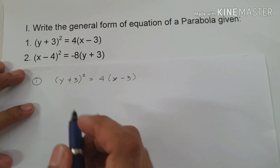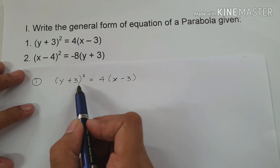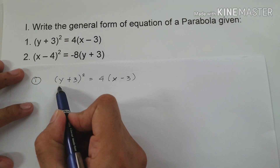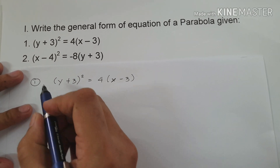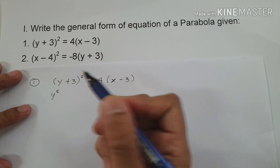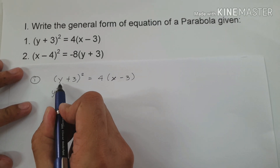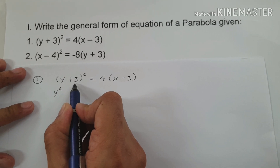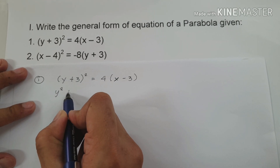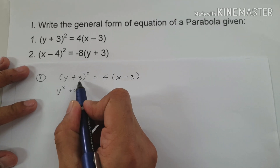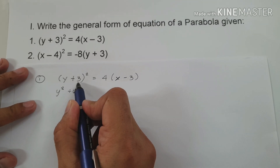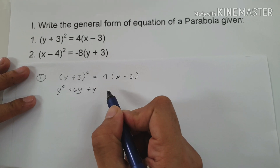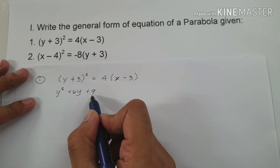The first thing we're going to do is simplify (y + 3)². We are going to square y, that is y × y = y². Then we multiply y and 3 by the constant 2: y × 3 = 3y, times 2, that is 6y. Lastly, we square the last term, 3: 3² = 9. So we have y² + 6y + 9.